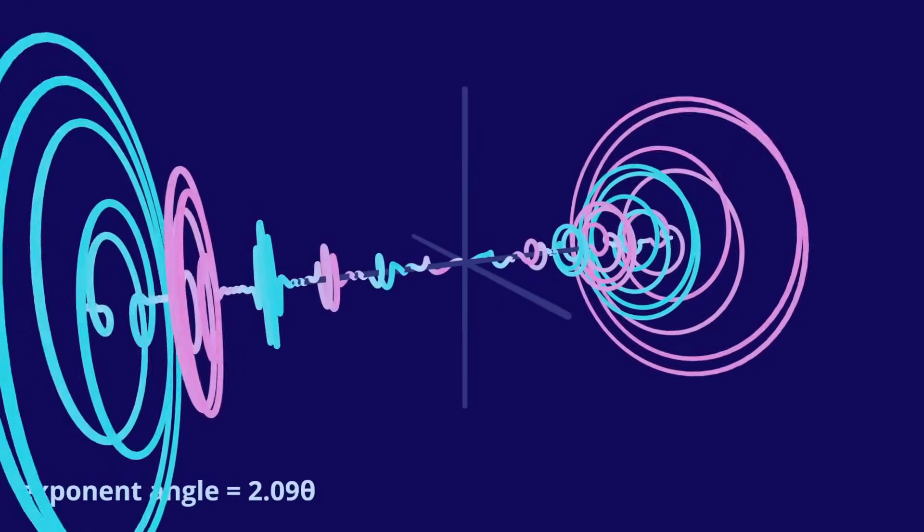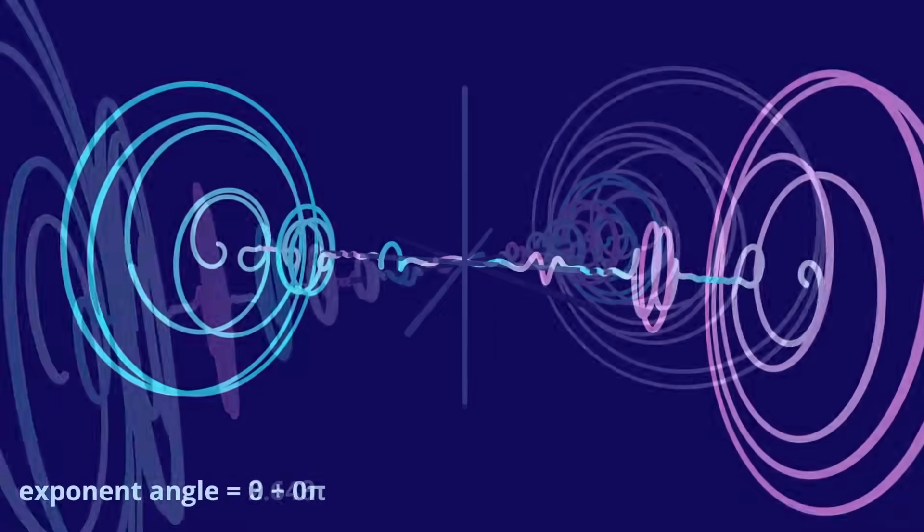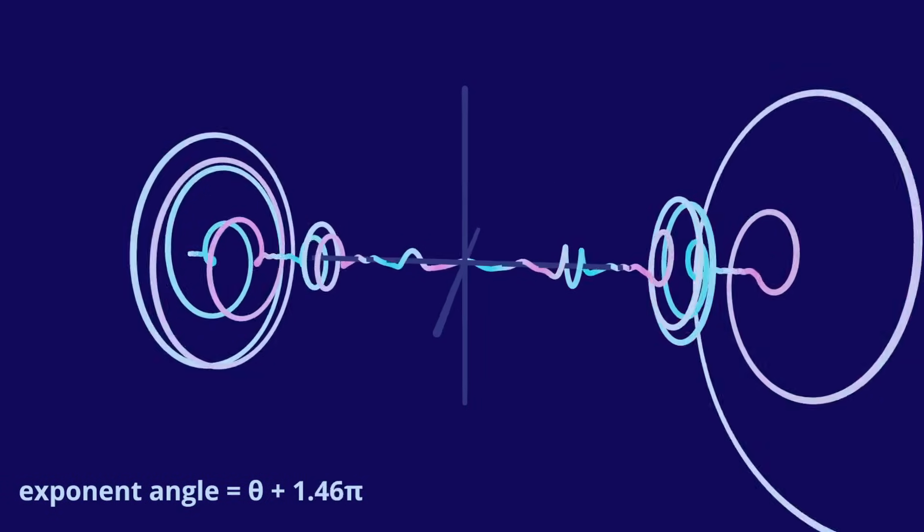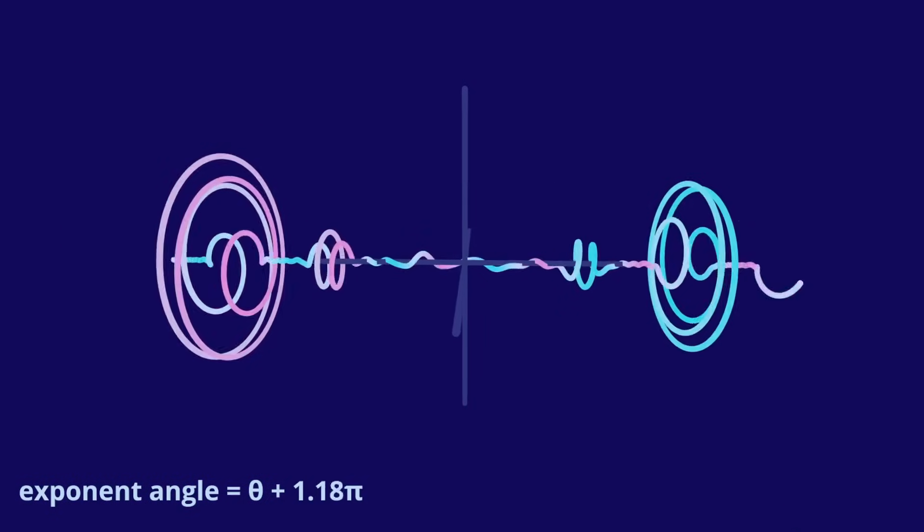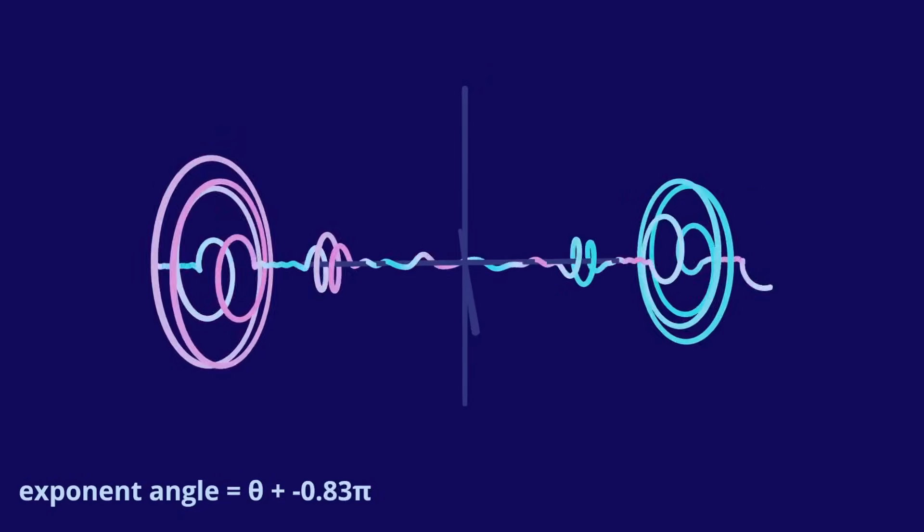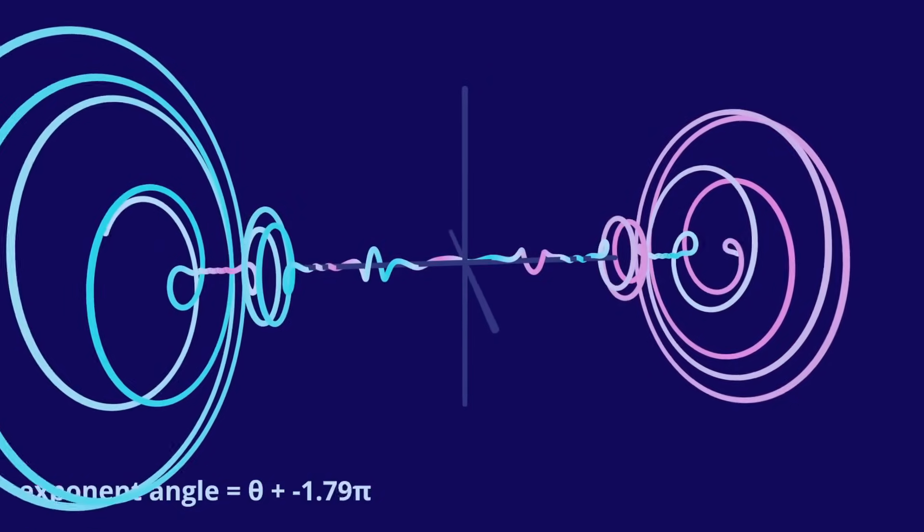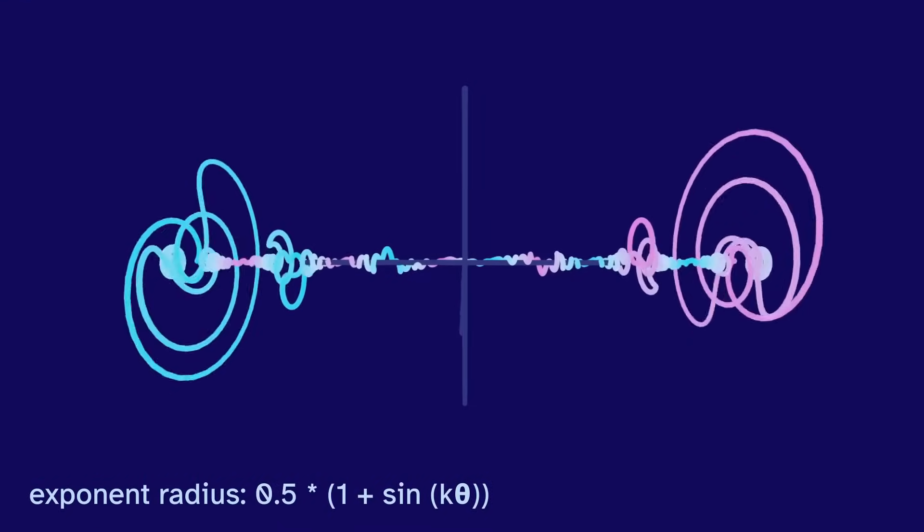We could also throw in another variable. One that adds to the angle. This pushes those maximums towards and away from the origin. And while we're at it, why not use functions for the radius too? This one makes the graph even more wiggly.